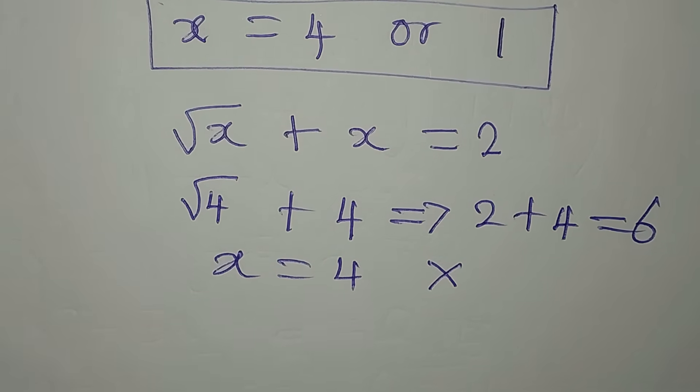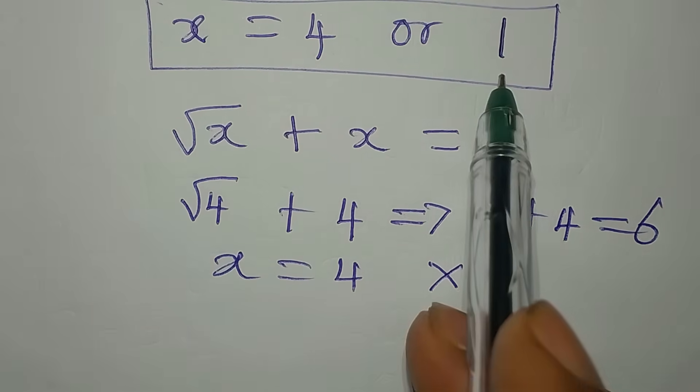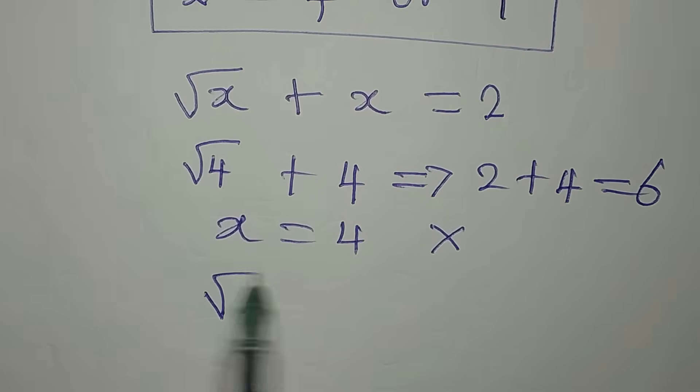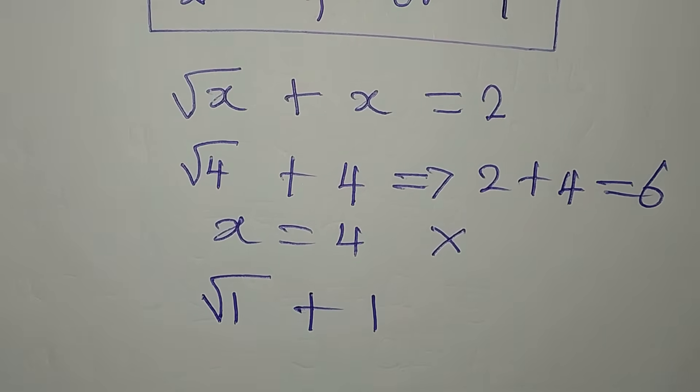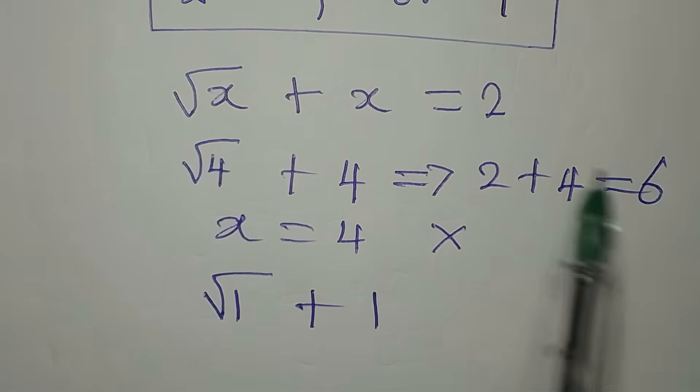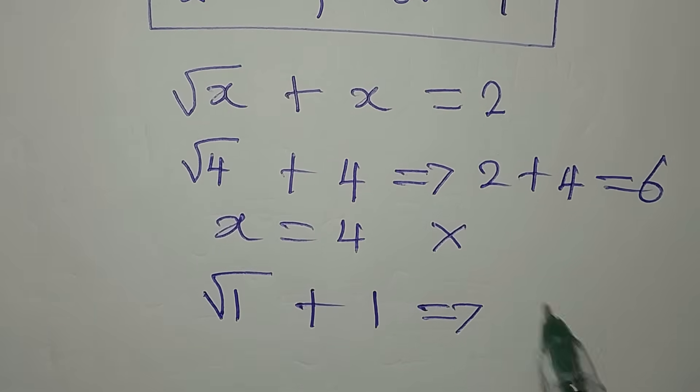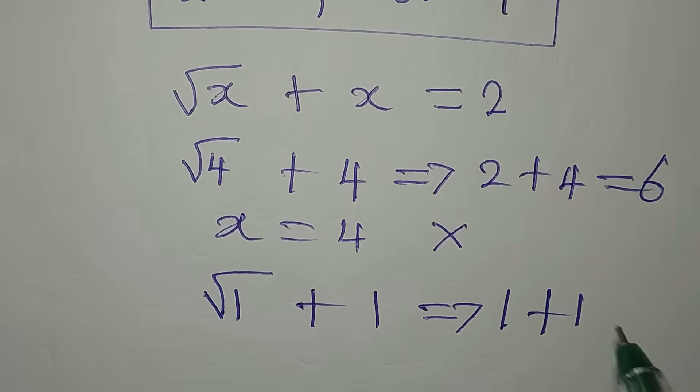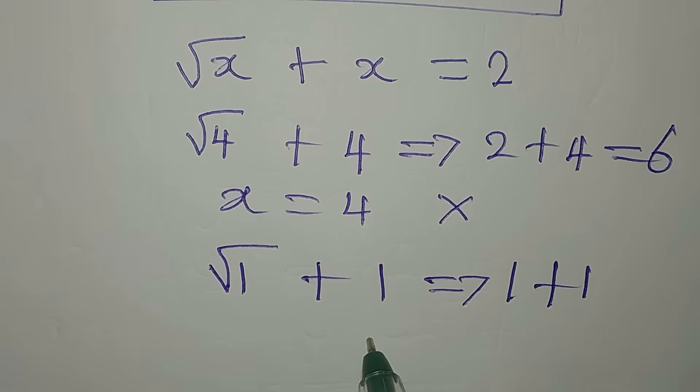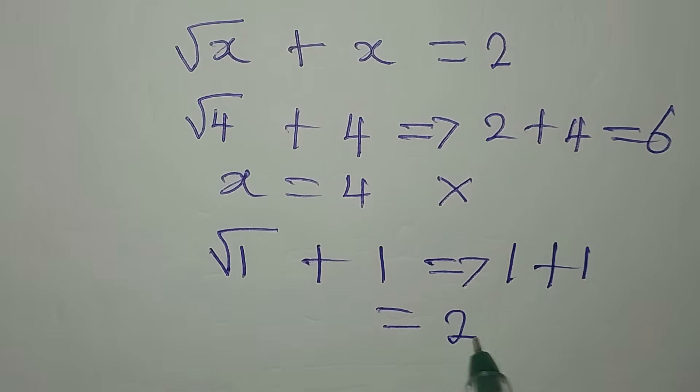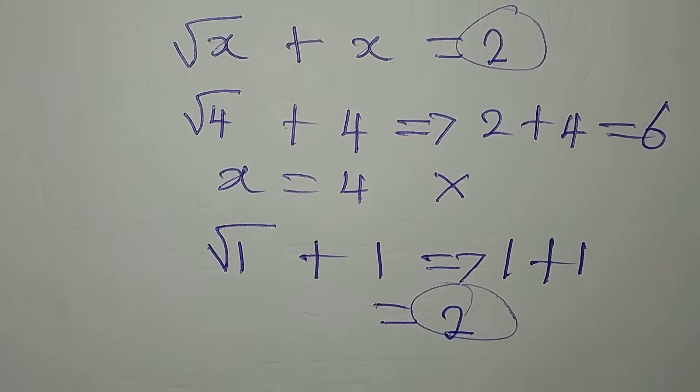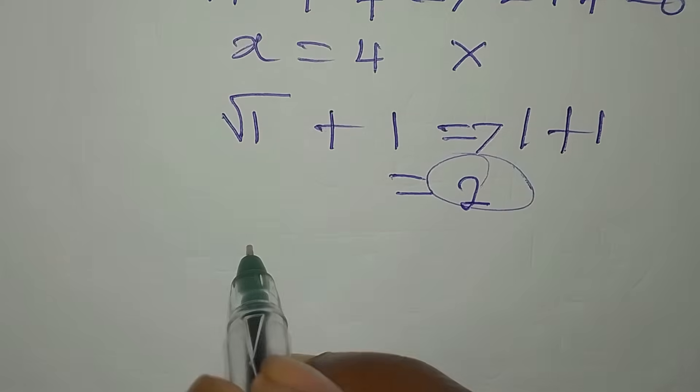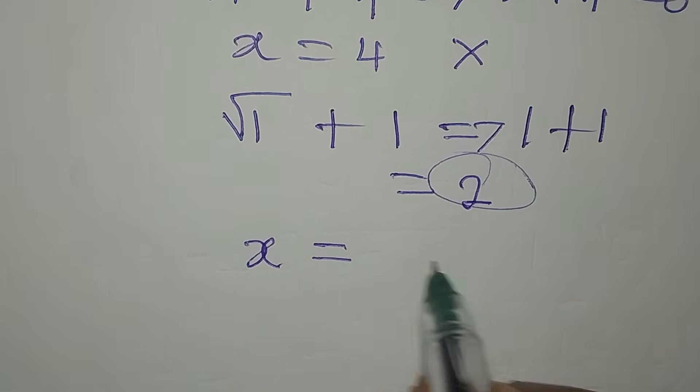Now the second is x equals 1. So that means we have root 1 plus 1, and that is the same thing as 1 plus 1. At the end of the day we have 2, and we had the same 2 on the other side of the equation. So we can now say that our x equals 1 satisfies the equation.